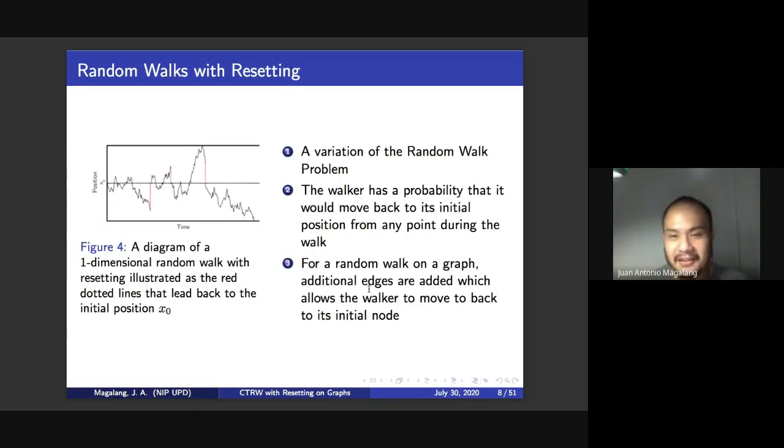And then we extend this even further by considering that the random walk would reset. So resetting would mean that the walker has a probability to move back to its initial position at any point during the walk. So here, in our figure, we have a one-dimensional random walk. And at some point in time, there is a probability for the walker to move back to its initial position, shown by these red dotted lines in the figure.